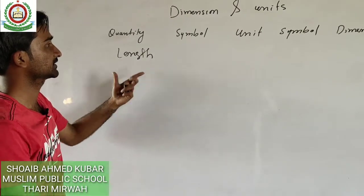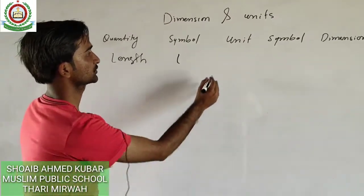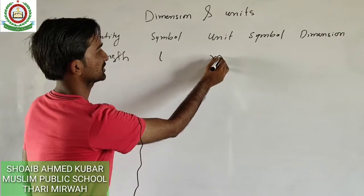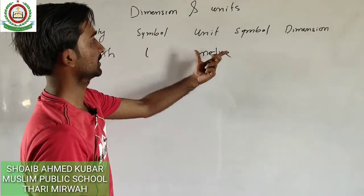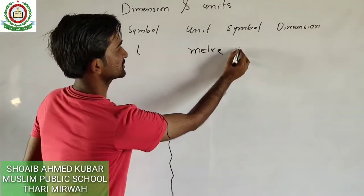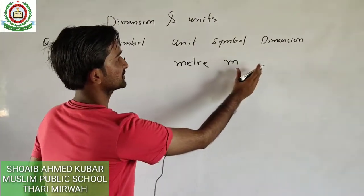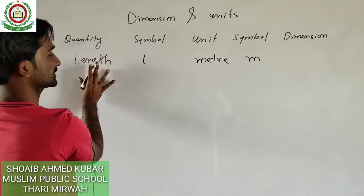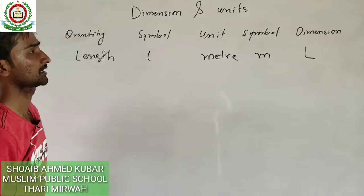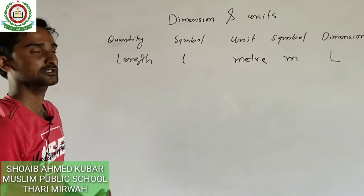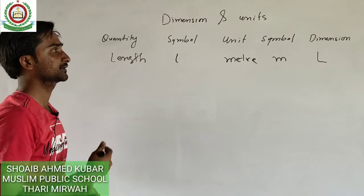For example, the quantity length is denoted by capital L, its unit is meter, the symbol for the unit is small m, and the dimension for the quantity length is capital L.